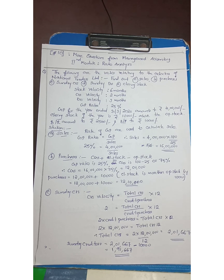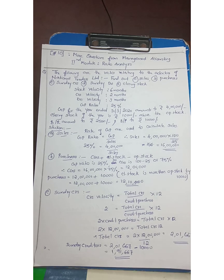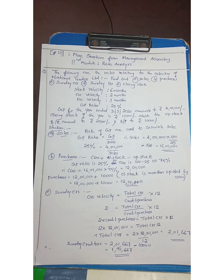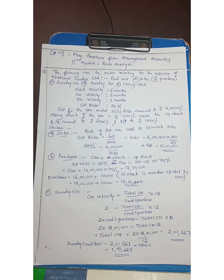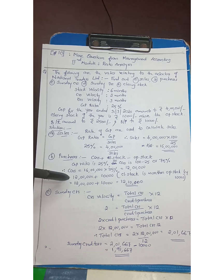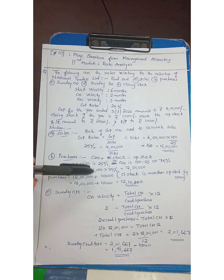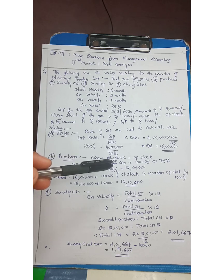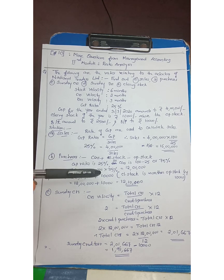The value of opening stock is 12,000. We will find out the cost of goods sold. The purchase is equal to cost of goods sold. The closing stock is 10,000.